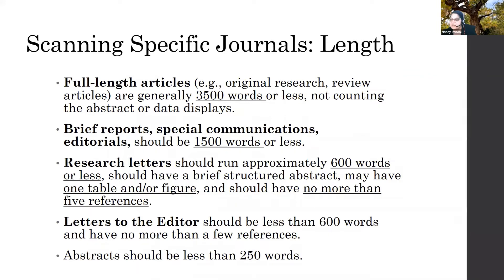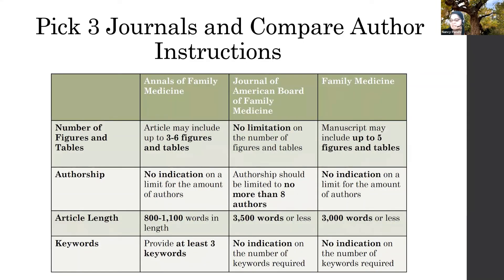One thing people often forget is that there are length limits on many journal types. It can be really painful when you've written 3,000 words you love and then realize it's only supposed to be 1,500 or less. Making time to know what they want in terms of word limits is critically important at the beginning. I like picking three journals and comparing their instructions side by side — your high-reach journal first, then a second, then a third — because if the requirements are very similar, reformatting after rejection becomes much easier.